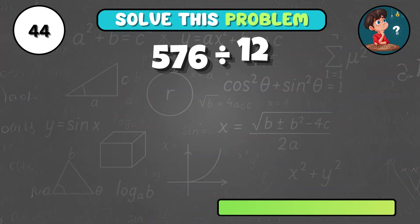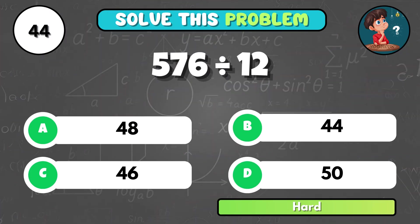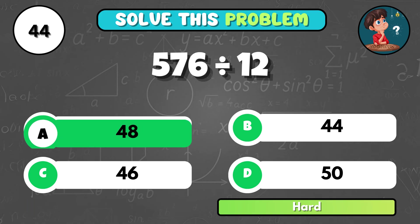What number do you get when 576 is divided by 12? That's A, 48.